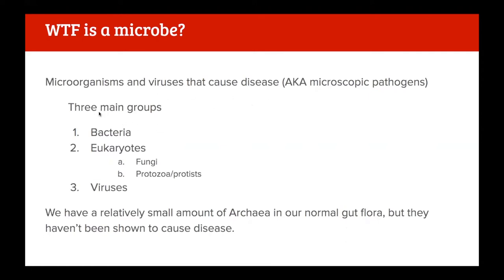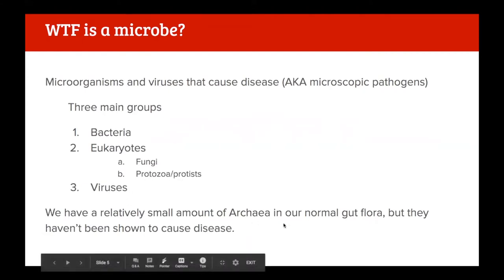The three main groups of pathogenic microbes are bacteria, some eukaryotes - so fungi and protozoans - and viruses. We're only going to look briefly at protozoans today. There's a very small amount of archaea in our natural gut flora but they haven't been shown to cause disease.